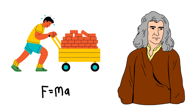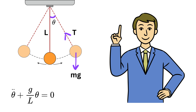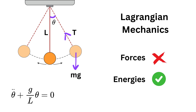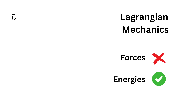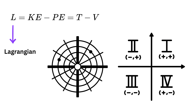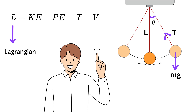In classical physics you might have heard of Newton's laws of motion, where we solve problems related to equations of motion by dealing with forces directly. But there is another way to deal with such problems called Lagrangian mechanics, which instead of looking at forces deals with energies of the system. This method works in any coordinate system and gives the same results as Newton's laws.